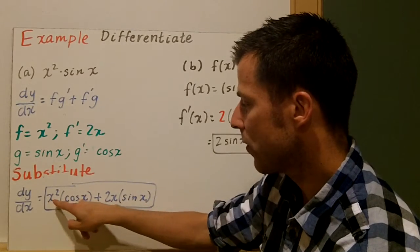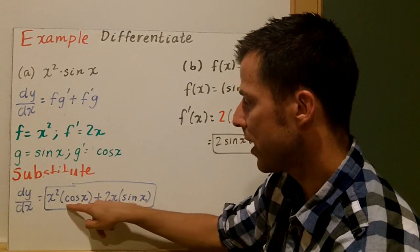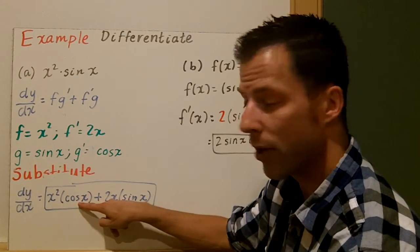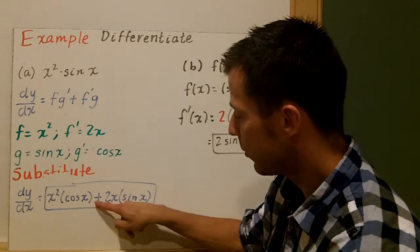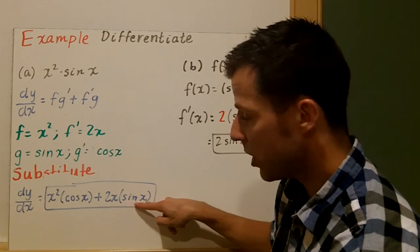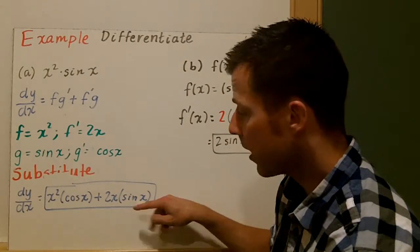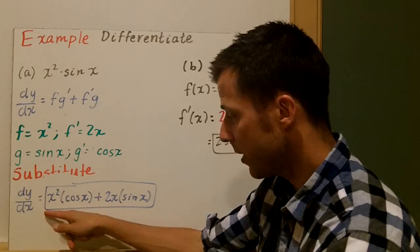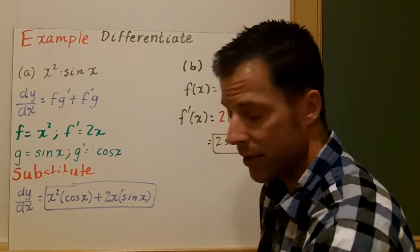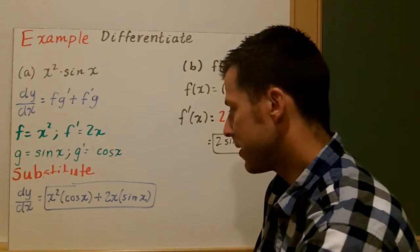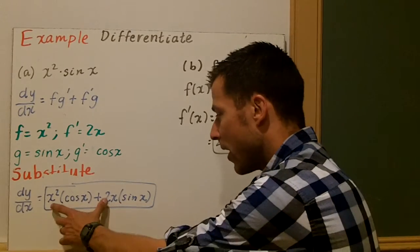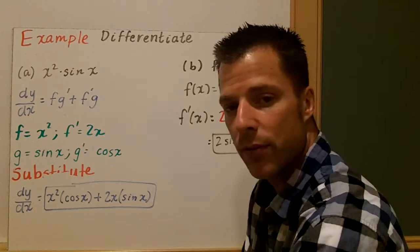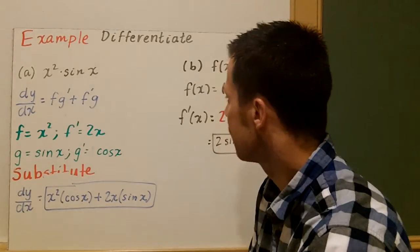I substitute each of my values into my product rule. So I have x squared times cosine of x — there's f times g prime — plus f prime times g. I just leave it. My derivative is boxed here. I didn't simplify it; I could have factored out an x, but this is good enough.